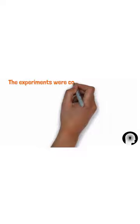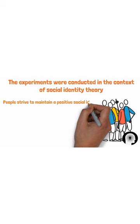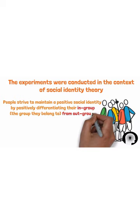The experiments were conducted in the context of social identity theory, which posits that an individual's self-concept is influenced by the social groups they belong to. According to this theory, people strive to maintain a positive social identity by positively differentiating their in-group, which is the group they belong to, from the out-group, which are other groups they do not belong to. This process can lead to in-group favouritism and out-group discrimination.